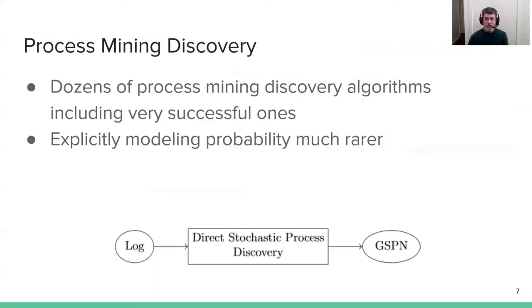With these existing techniques, there's quite a few process mining discovery algorithms that take those event logs and produce process models of different types. There's some very successful ones. One thing that is rare among those discovery techniques is explicitly modeling probability in the output model, so having some indication of weights or probabilities in the output process. When that's done, it's often done as a post-processing step. But this is pretty relevant information—if you have a rare event, that's quite relevant information when thinking about how a process works.